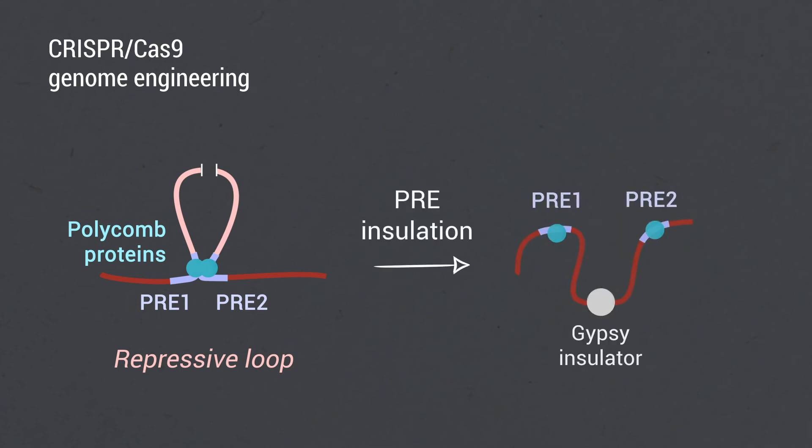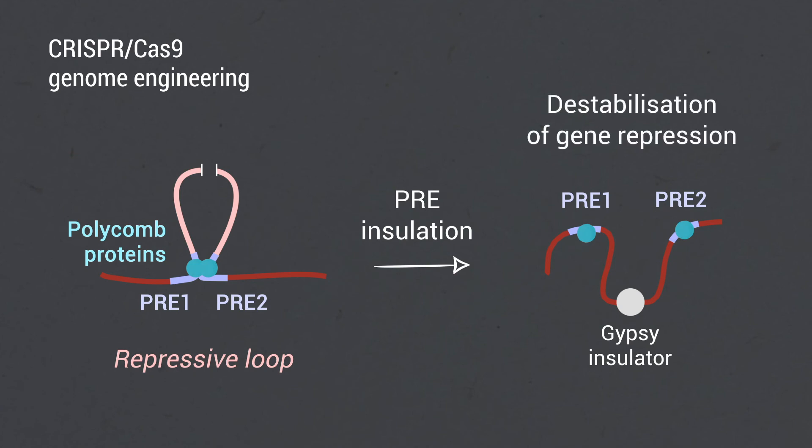Perturbation of PRE function by CRISPR-Cas9 genome engineering affects polycomb domain formation and destabilizes polycomb-mediated silencing. Preventing loop formation without removal of polycomb components also destabilizes silencing.